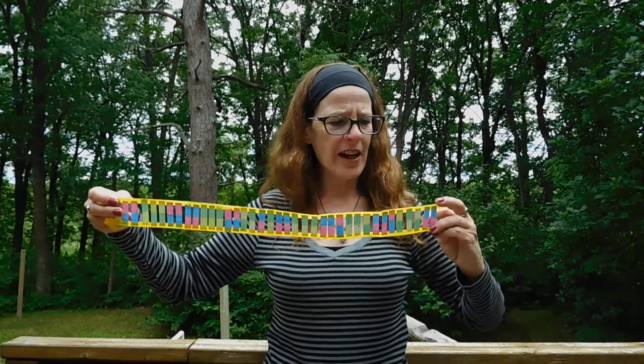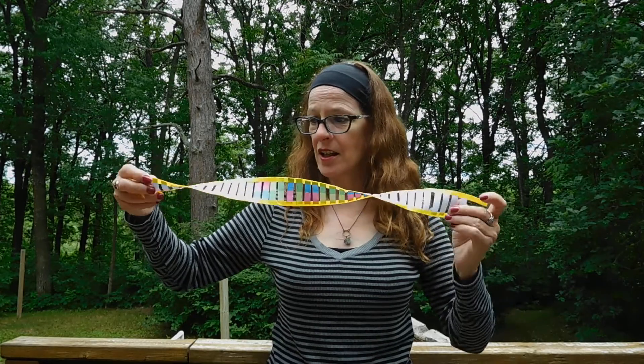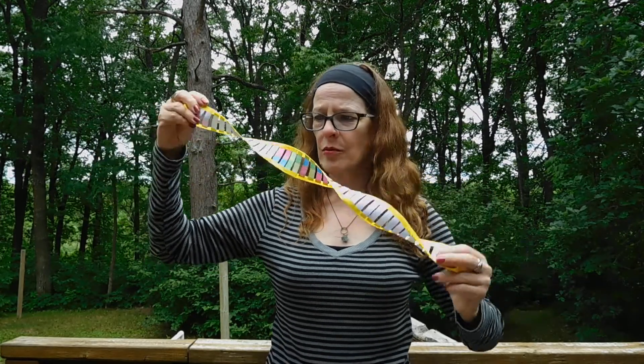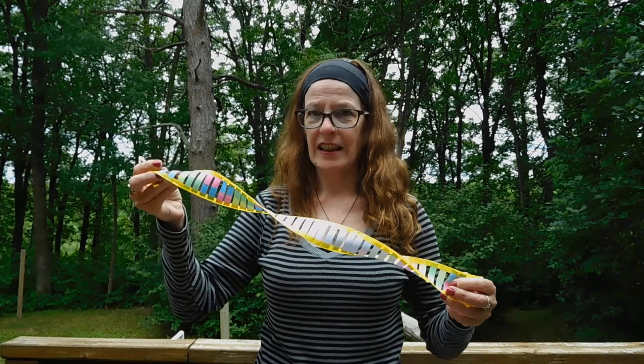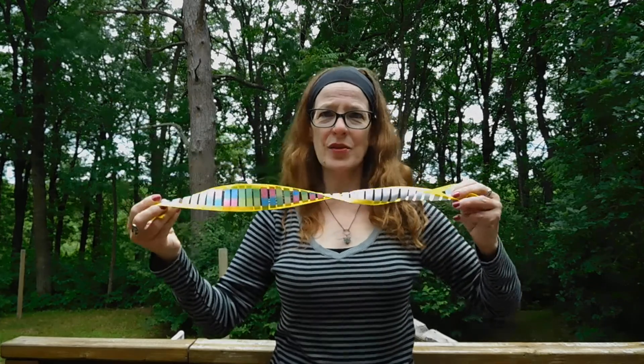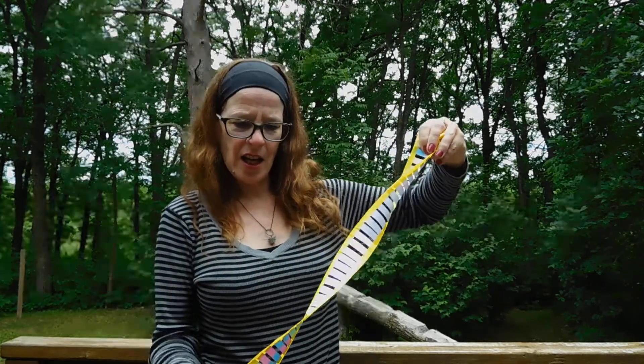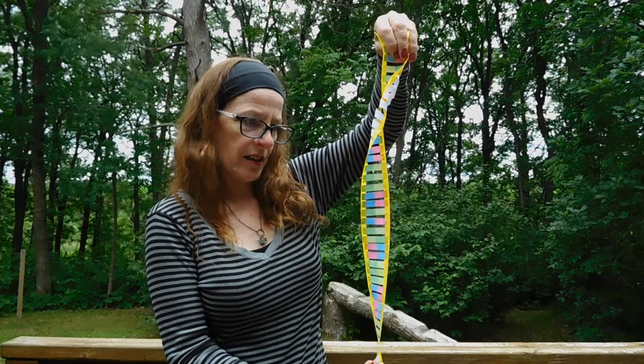A DNA molecule actually is what's called a double helix. So its form is twisted like that. So that is what a DNA molecule looks like. It's a twisted ladder basically.